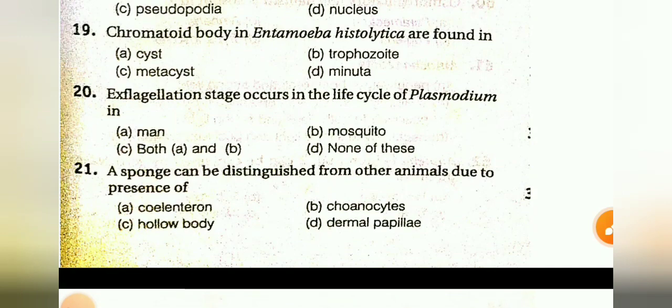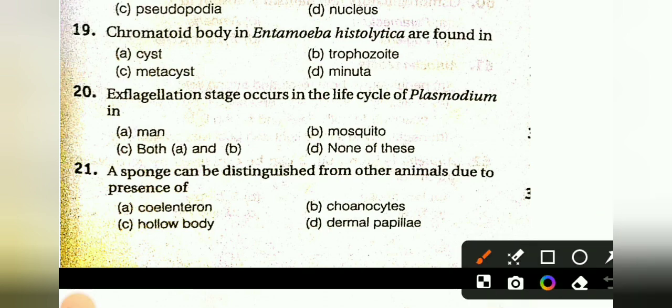Chromatoid bodies in Entamoeba histolytica are found in: cyst, trophozoite, metacyst, or minuta form. The answer is A, cyst.